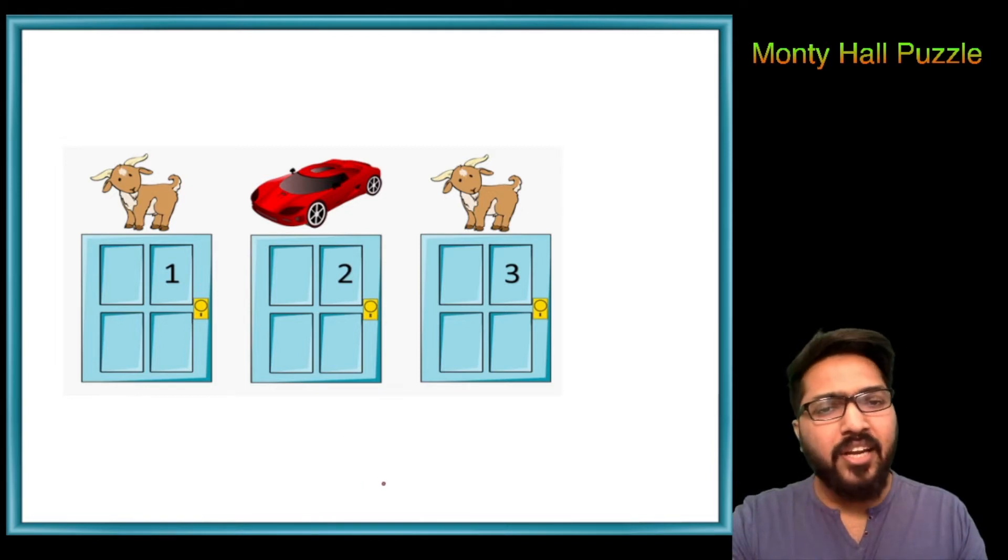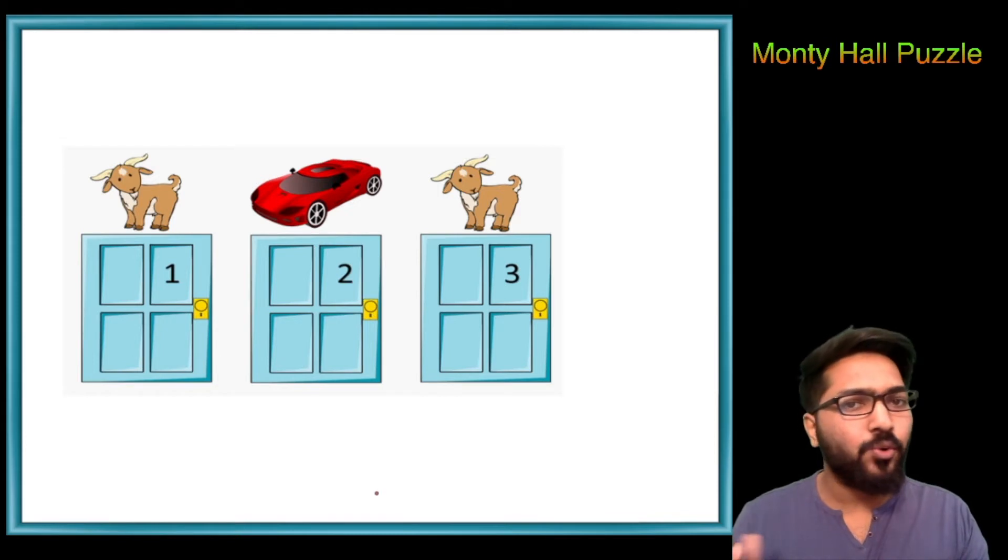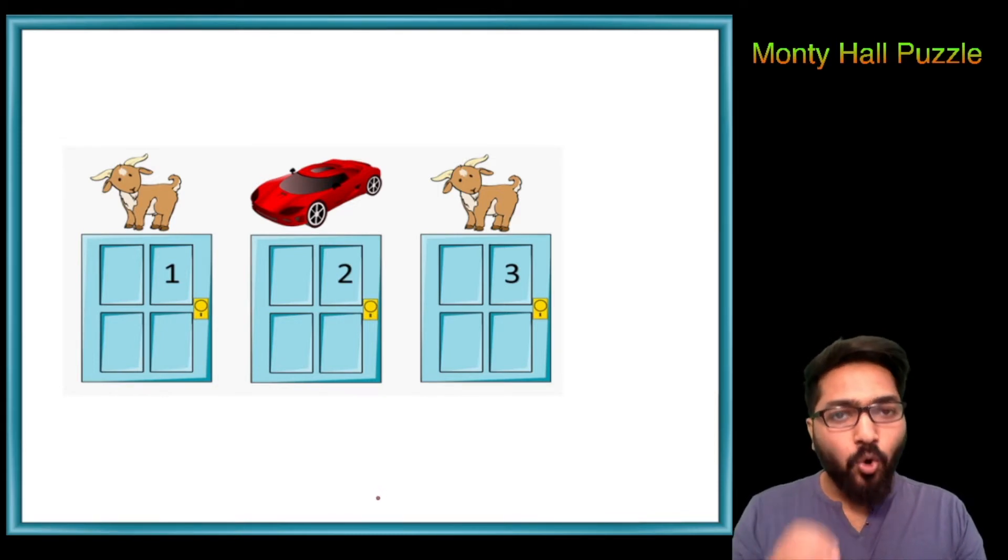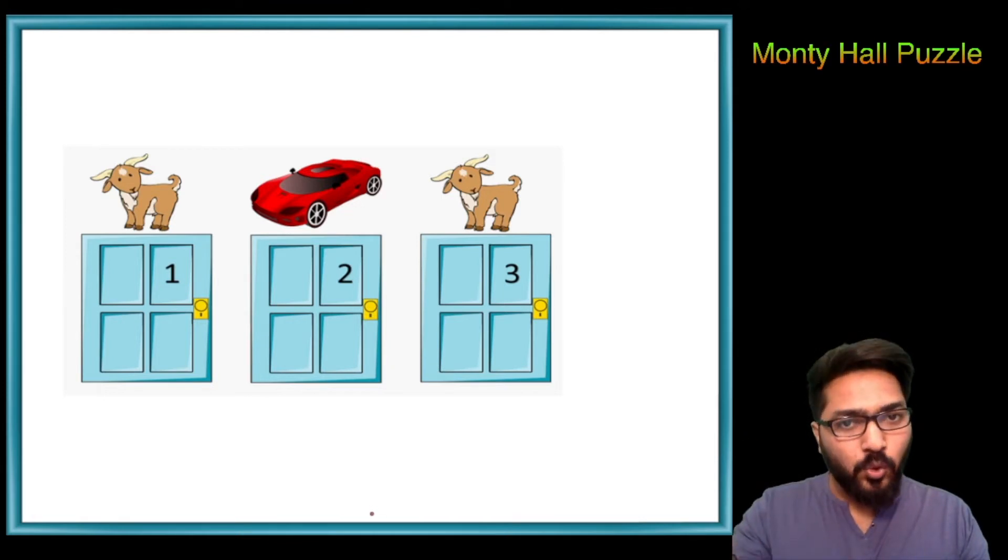As per the game, the contestant randomly picks any one of the doors because he doesn't know anything right now. After that, the host opens any one of the other remaining two doors and shows that there is a goat behind it.